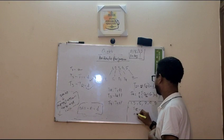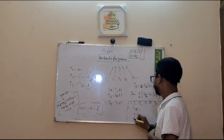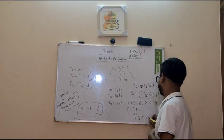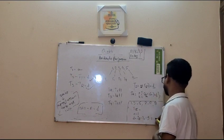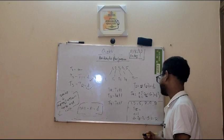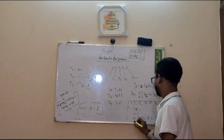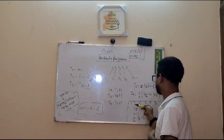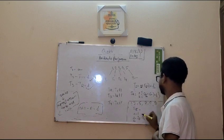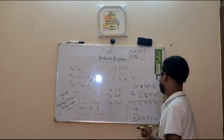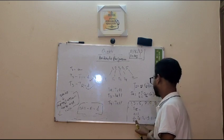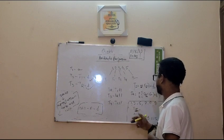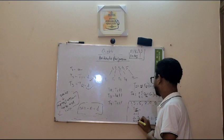The first term is A equals to 1. The common difference as we can see is T2 minus T1 which is 3 minus 1 is equals to 2. And N is equals to how many terms are there? Since we are asked to find the summation of 15 terms, the number of terms is 15.